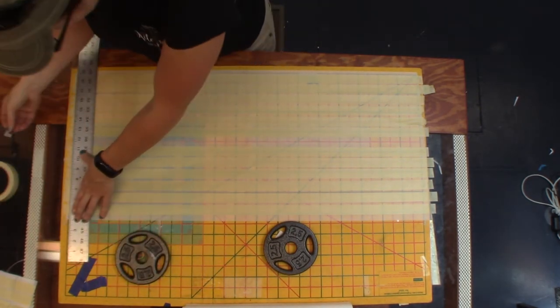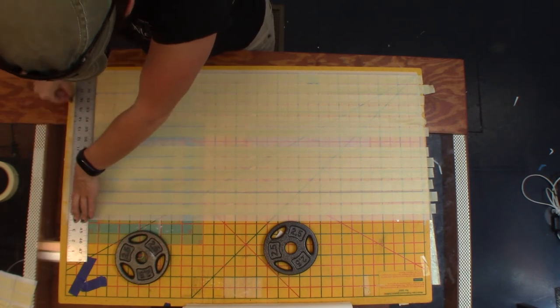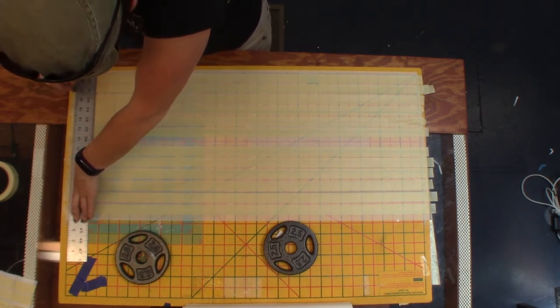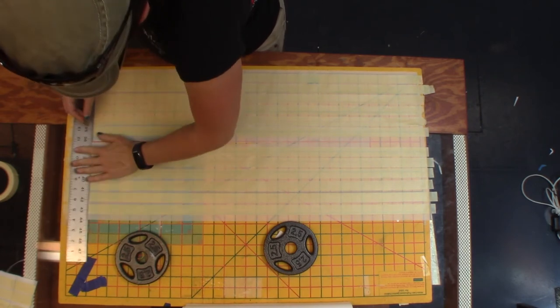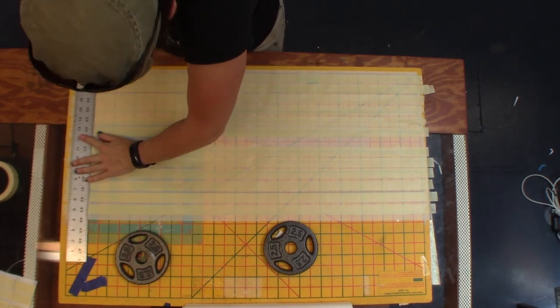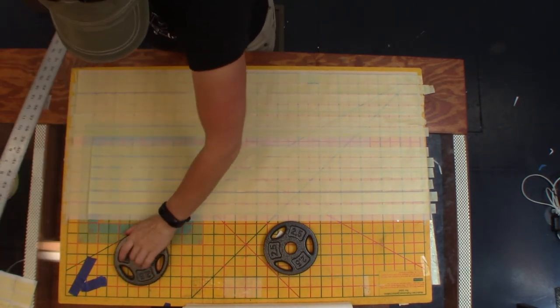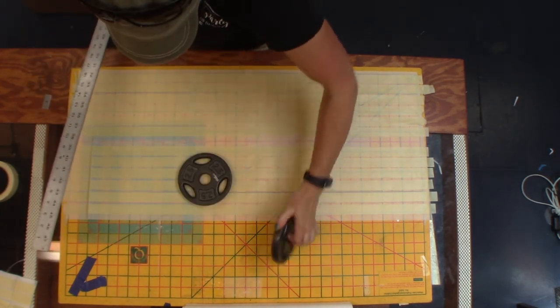Line up the ruler and start making cuts every two inches. It happens that the ruler I'm using here is two inches wide. Otherwise, I'd be using the cut lines on the cutting mat that are visible through the parchment paper.